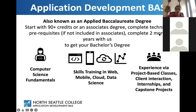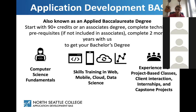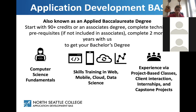Application Development Bachelor's of Applied Science is also known as an applied baccalaureate degree. You start with 90-plus college credits or an associate's degree, complete the technical prerequisites if they are not included in your associate's degree, and then complete two more years with us — so this is a two-plus-two program. You'll build computer science fundamentals, get skills training in web, mobile, cloud, and data science, and gain experience via project-based classes, client interaction, internships, and capstone projects.